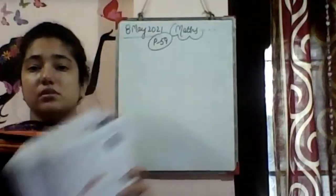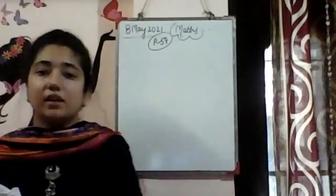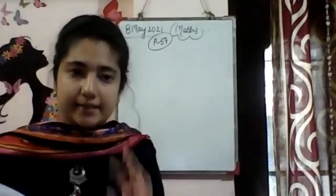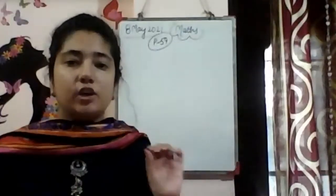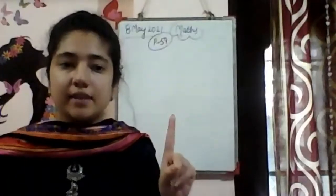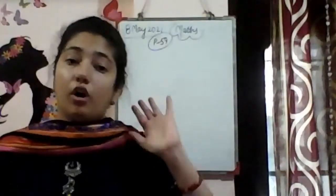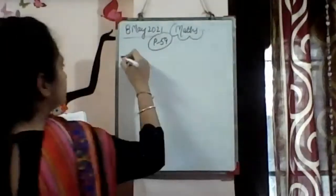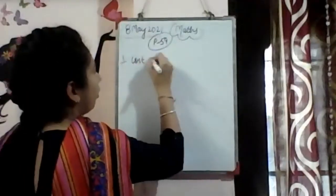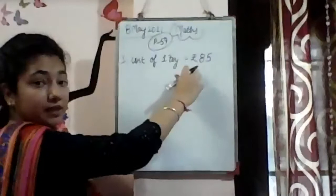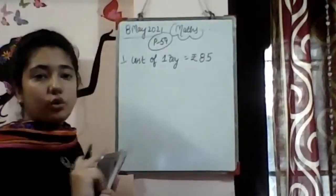I am going to read the first statement. Number 1 is, the cost of 1 toy is Rs. 85, means 1 toy ki cost hai 85 rupees. How much money is needed to buy 6 such toys? The cost of 1 toy is Rs. 85, but we need to buy 6 toys.